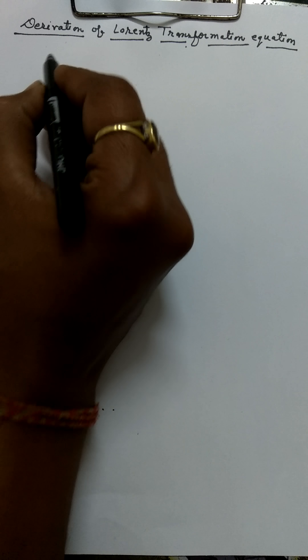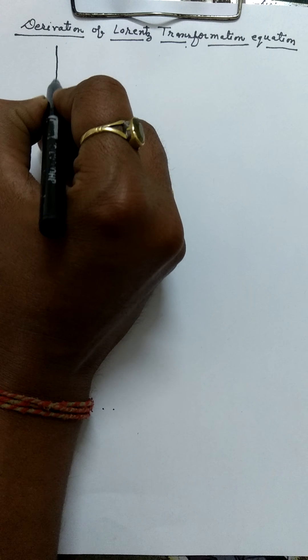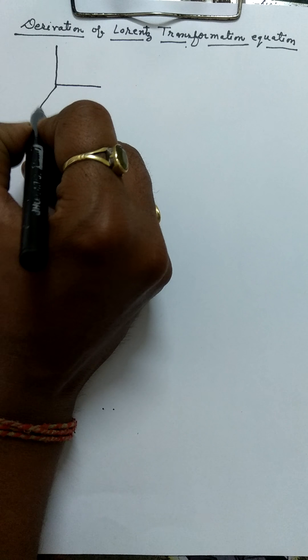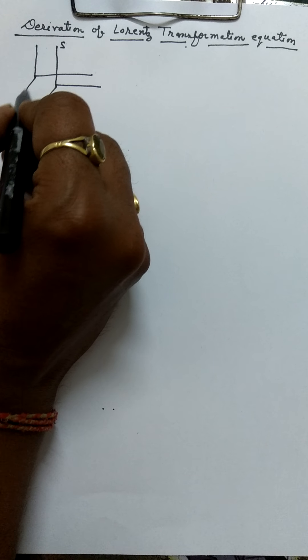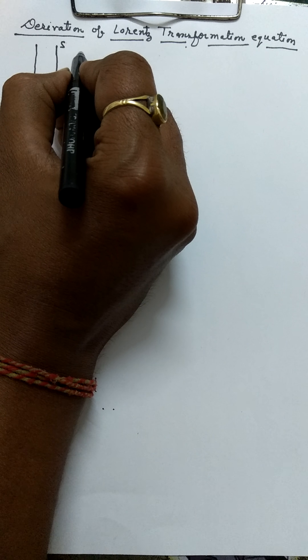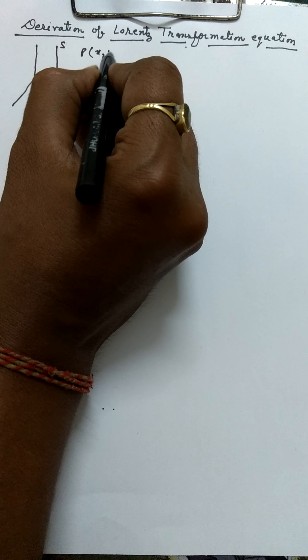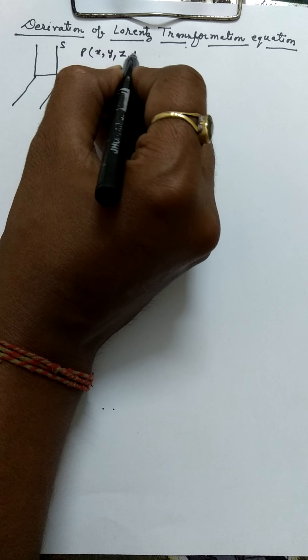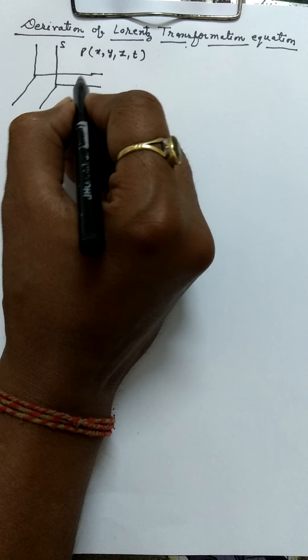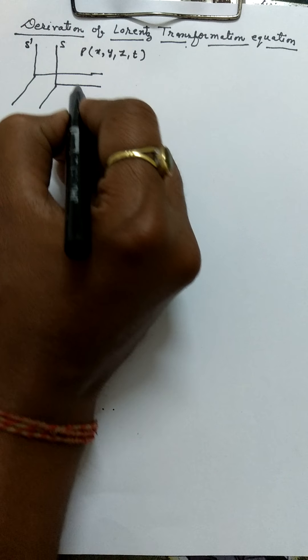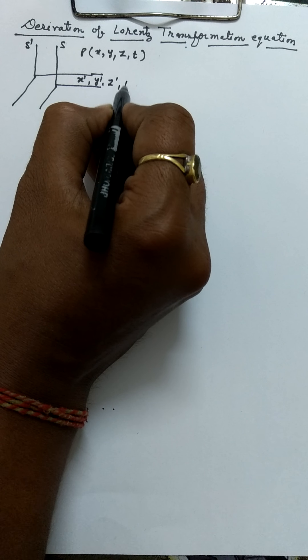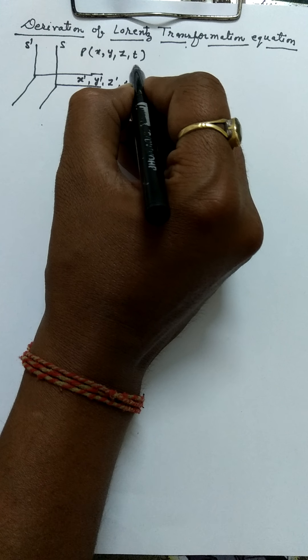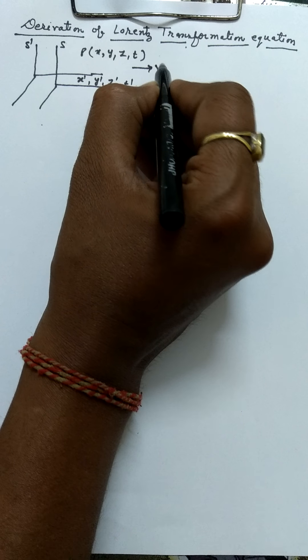Today I will teach derivation of the Lorentz transformation equation. We have two frames of reference, S and S dash. The coordinates of frame S are x, y, z, t, and in frame S dash: x dash, y dash, z dash, t dash. The relative velocity of both frames is v.